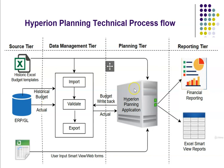Now coming to the third layer: the planning application. The planning application processes the data, allocates the data as required, or performs other calculation rules. Users can manually input data for the next budget year, do comparisons against actual and budget or other scenarios, and do the planning accordingly. The final layer is the reporting layer, where formatted financial reports can be generated using the financial reporting tool, and users can do analysis using Smart View.